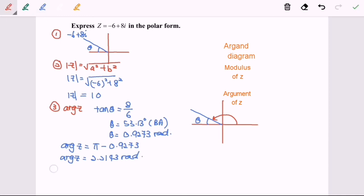Step number four, polar form. So for this case, the polar form will be equal to 10 cos 2.2143 plus i sine 2.2143. So here we are. And thanks for watching.